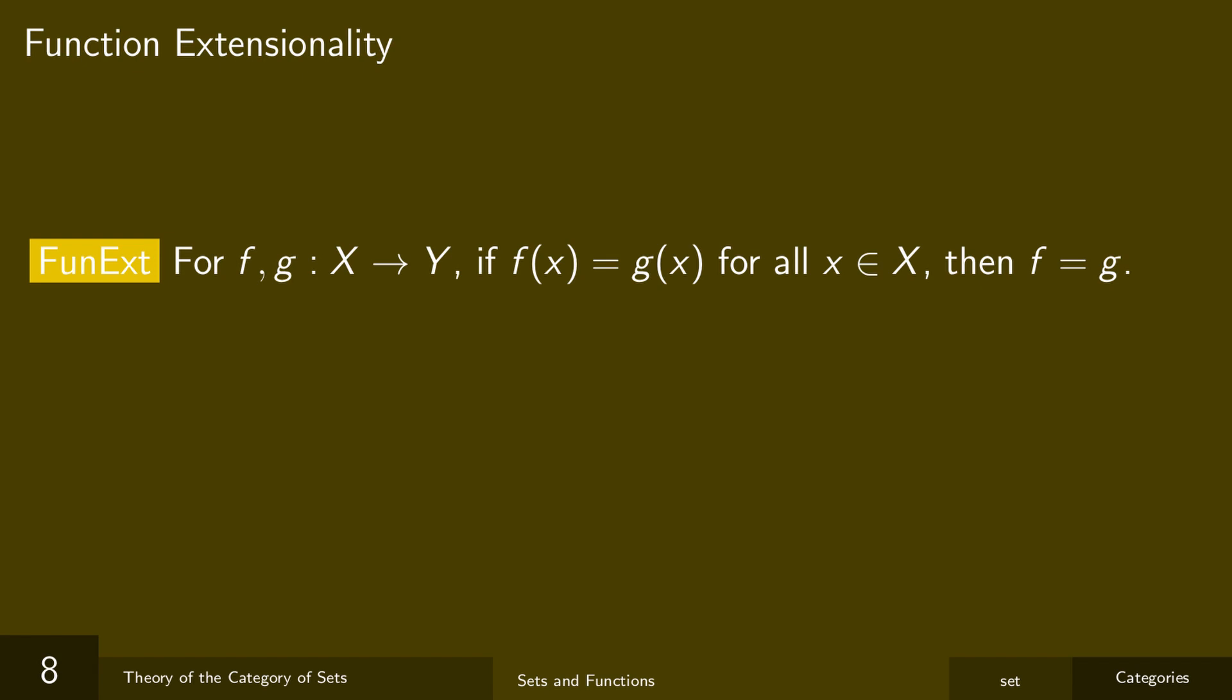So here's an important principle. If f and g are functions with the same domain and same codomain, and which transform elements in the same way, then they are the same function. Transforming elements in the same way means that for every element x of the domain, f(x) is the same as g(x). We call this the principle of function extensionality.